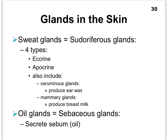The sweat glands are also called the pseudoriferous glands, and there are several kinds. The two most common are the eccrine sweat glands and the apocrine sweat glands. Now you've learned the term apocrine before to learn about how glands secrete, but this name is not based on the mode of secretion, so this is kind of a misnomer.